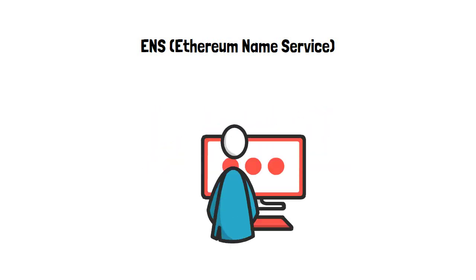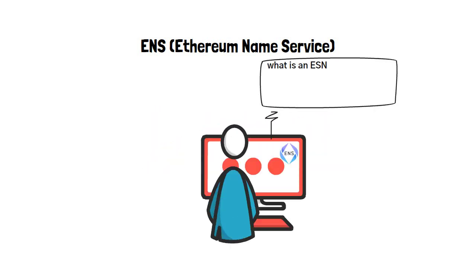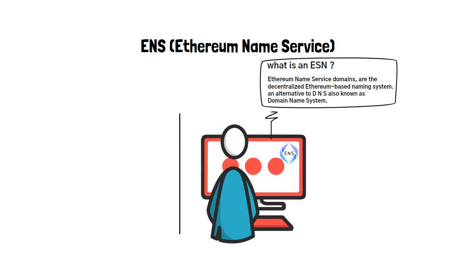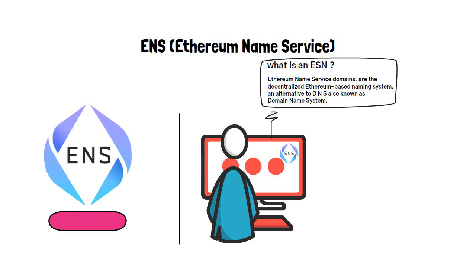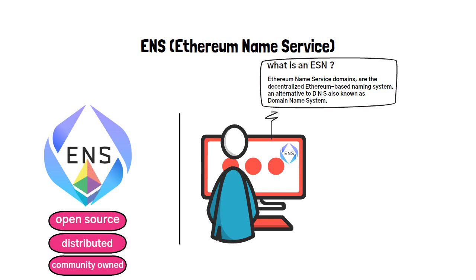So what is ENS? Simply put, ENS — which is also known as Ethereum Name Service domains — is a decentralized Ethereum-based naming system, and an alternative to DNS, also known as domain name system. ENS is an open-source, distributed, and community-owned naming system that resides in the Ethereum blockchain.